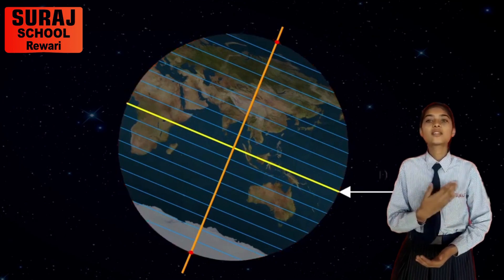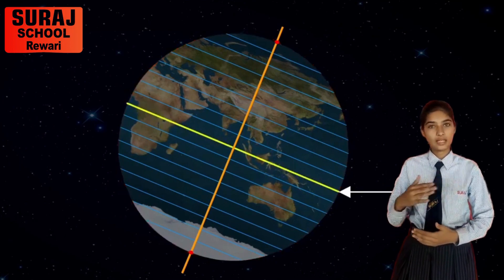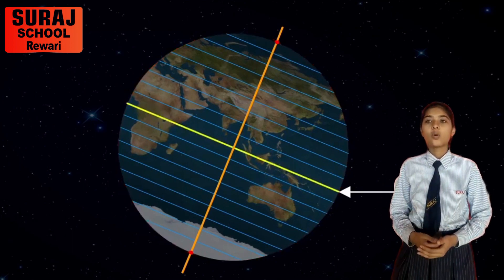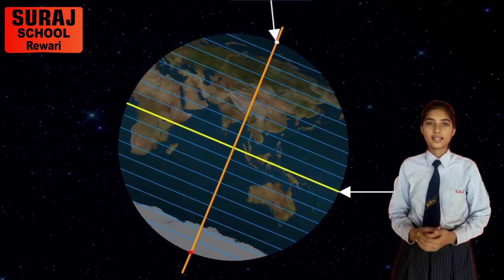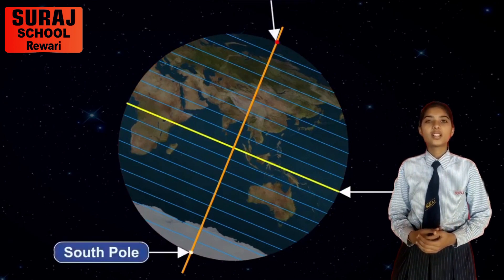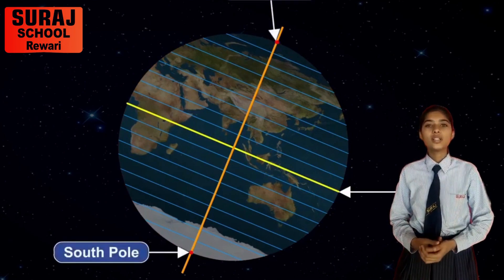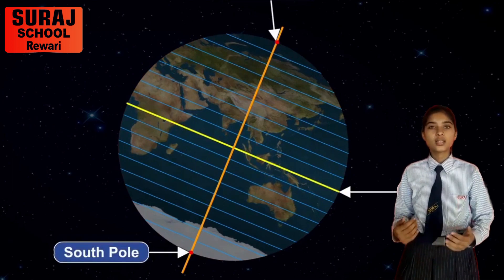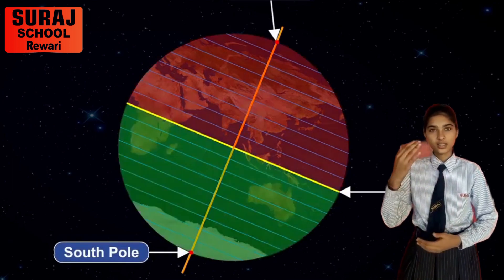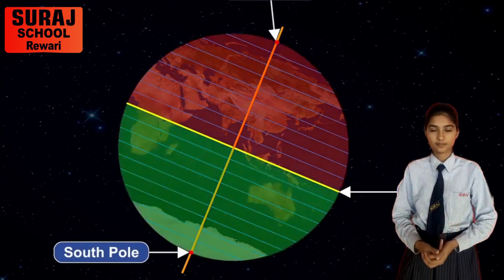They run from east to west direction and they all are parallel to each other. They have different lengths, in which the equator has the longest length. The equator divides our Earth into two hemispheres: the northern hemisphere and the southern hemisphere.